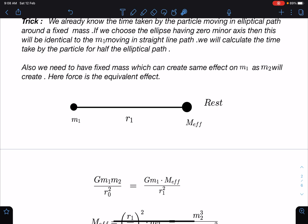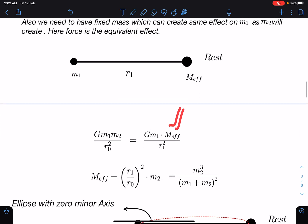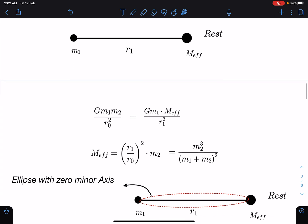Now if I further simplify this, m effective comes as r1 squared by r0 squared times m2. So when I substitute the value I'm getting this as m2 cubed by (m1 plus m2) whole squared.